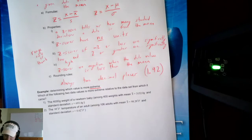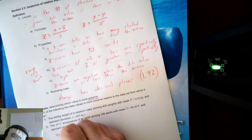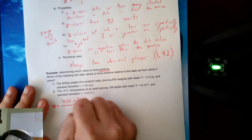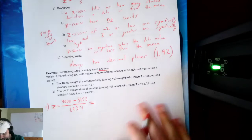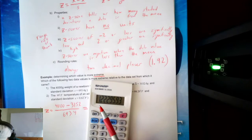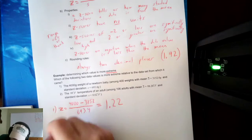Part one: z equals 4000 minus the mean 3152.0, over the standard deviation 693.4. That gives me 1.2229593, which rounds to two decimal places: 1.22. That's the z-score for the baby.